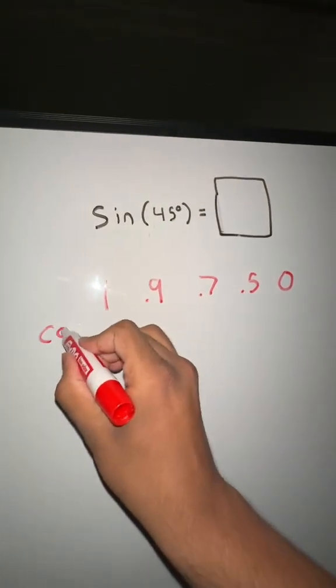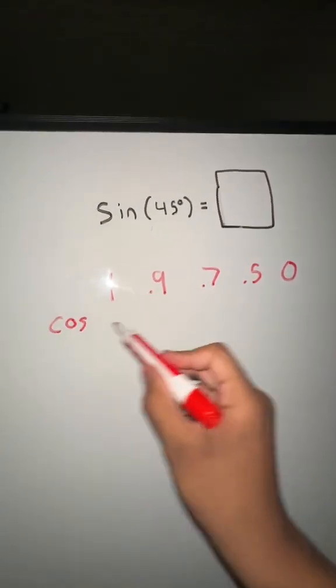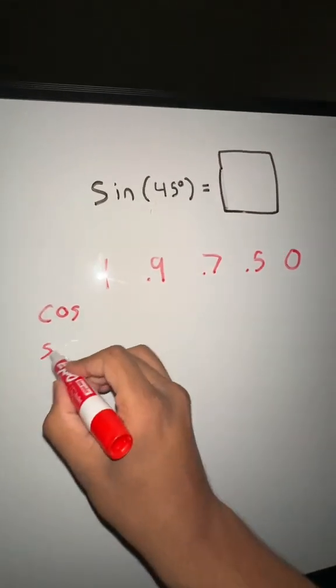And I like to start with cosine right here. These are the values you're going to get based on the degrees that we're going to put over here. So let me elaborate real quick.